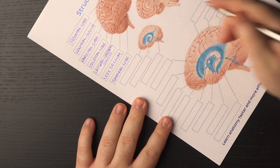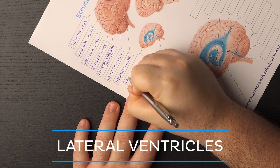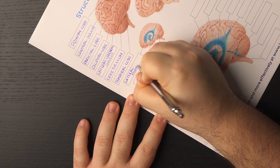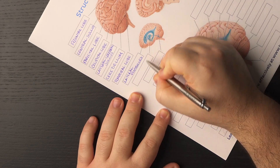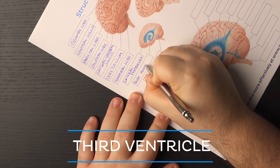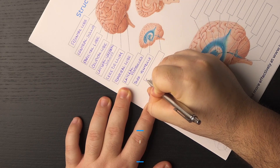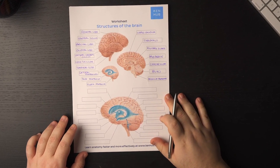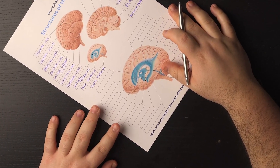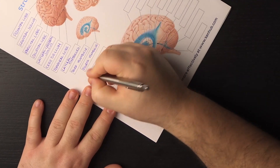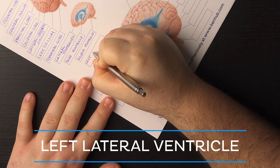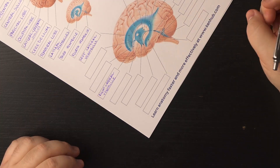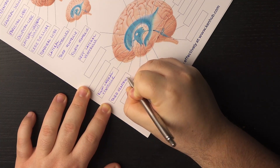Now we just need to talk about the ventricles of the brain. The lateral ventricles are C-shaped cavities, one in each cerebral hemisphere, and are the largest ventricles of the brain. Then we have the third ventricle, which is a slit-like cavity in the midline between the two thalami. And finally, we have the fourth ventricle, the most inferior of the four, situated within the brainstem. Our worksheet has at the bottom a bigger image with a more detailed view of the ventricular system of the brain. Let's fill in the structures we already identified: the left lateral ventricle, a bit of the right lateral ventricle, the third ventricle, and the fourth ventricle.